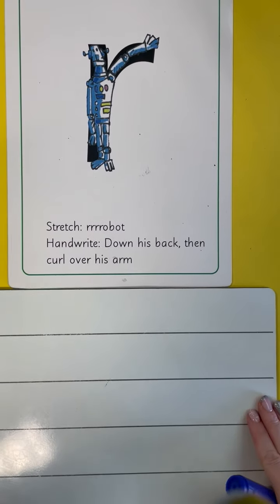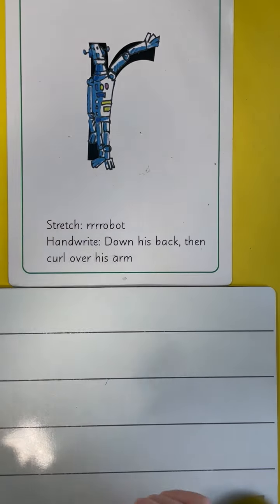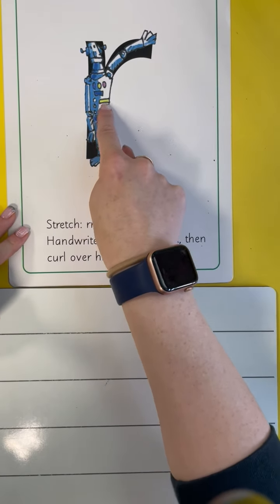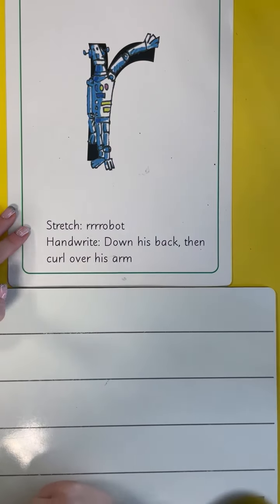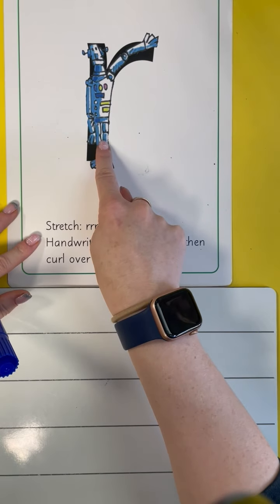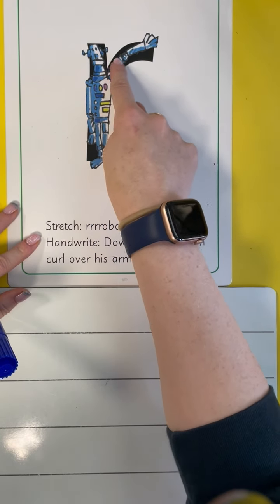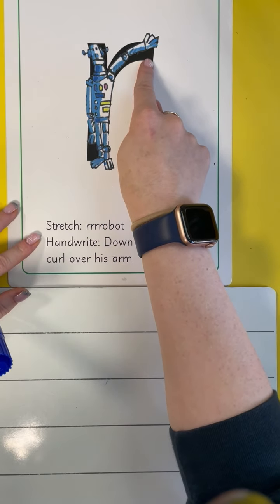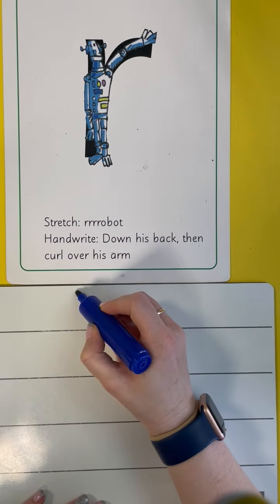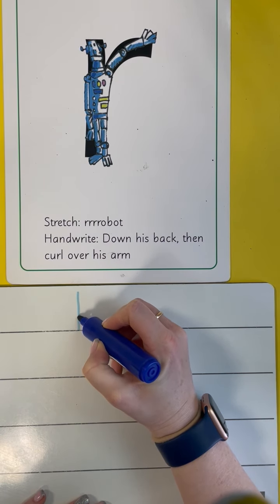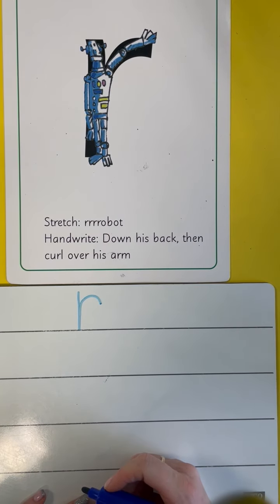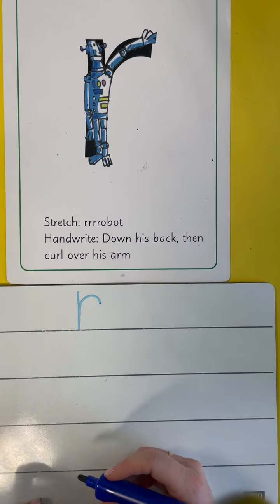So to write our R, we go down his back and then curl over his arm. Again, down his back and curl over his arm. Now I'm going to do it on the whiteboard. So we go down his back, back up and curl over his arm. R. R.